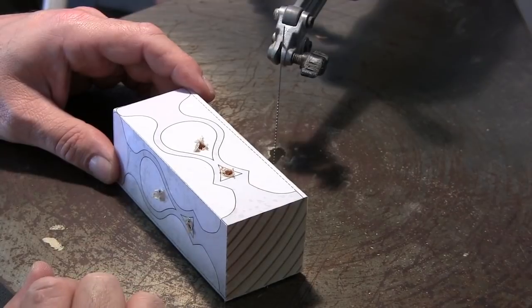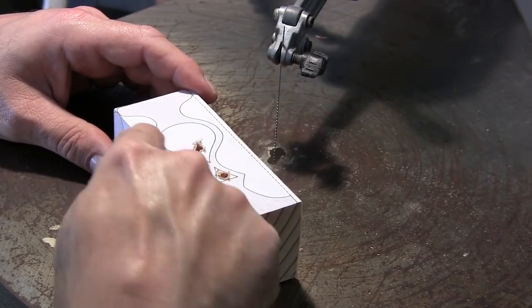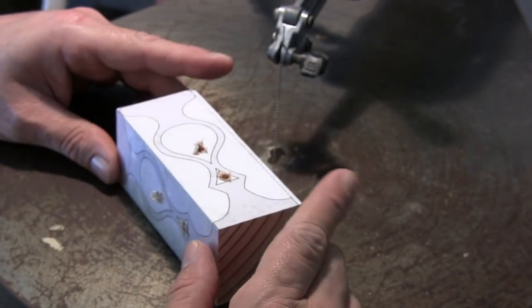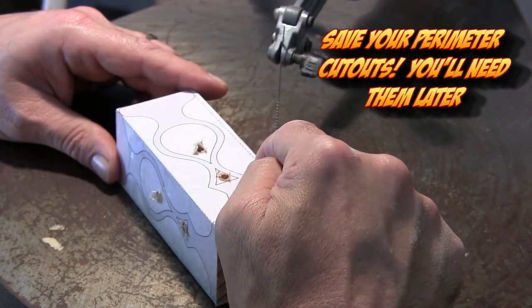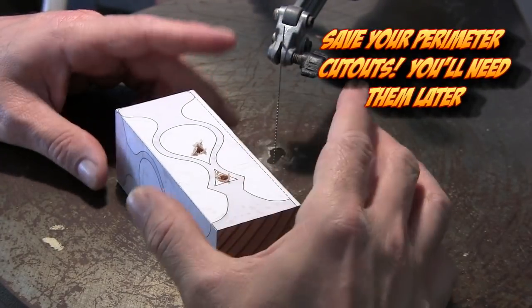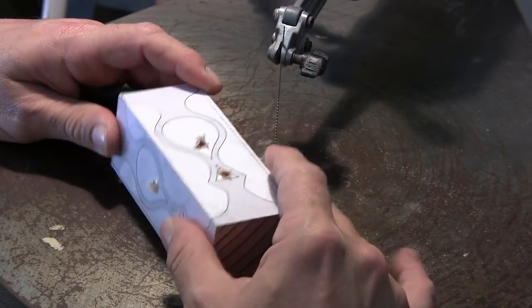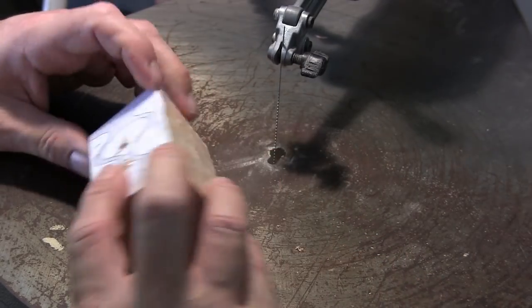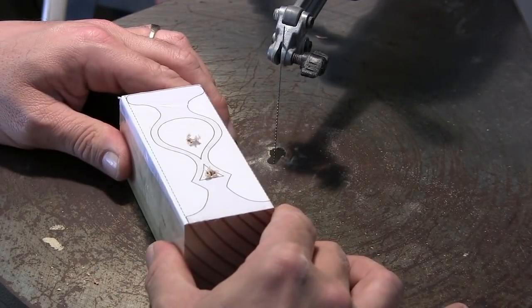We want to do the inside cuts first and then we're going to do the perimeter. As you cut the perimeter out, it's important to remember, save your scrap pieces because you're going to need them. We're going to have to tape them back up in order to do the other side. That way we have a nice flat surface to scroll on.